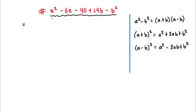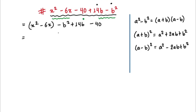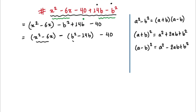Let's start factorizing. We are going to put the two terms containing x in one bracket and the two terms containing b in another bracket, with minus 40 alone. So we have (x squared minus 6x) minus (b squared minus 14b) minus 40. Note that when there is a minus sign before a bracket, the signs inside change — so plus 14b becomes minus 14b.